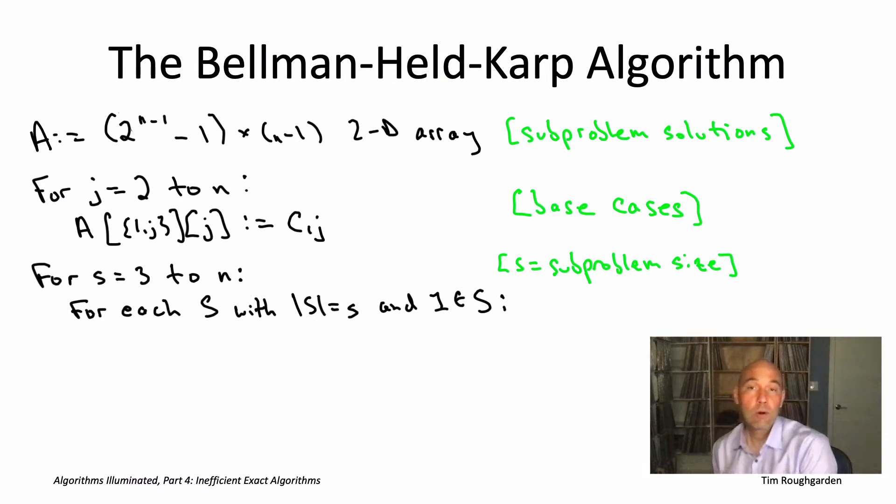So now we have two more for loops which are looping over the choices of the parameters capital S and little j. Since little j is supposed to be drawn from the set capital S, it makes sense to first start by looping over all the subsets of the current size, size little s. Then for a given subset, capital S, we know all the choices of j. It's every vertex in capital S, except for the vertex 1.